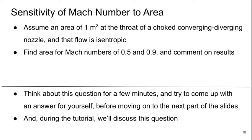So I want to now think about the sensitivity of the Mach number to the area. So if we assume that, let's just say to make the numbers easy, we're dealing with a cross-sectional area at a throat of one meter square. And then we've got a choked, converging, diverging nozzle and that the flow is completely isentropic.